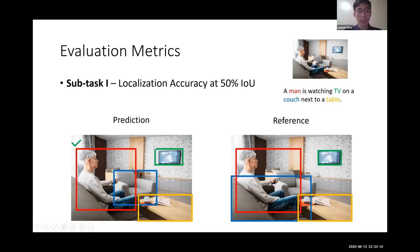The green box corresponds to TV and it overlaps over 50% IOU with the ground truth TV box. So that's also a correct prediction.